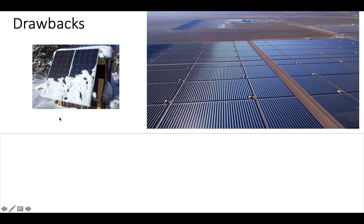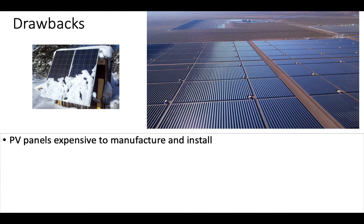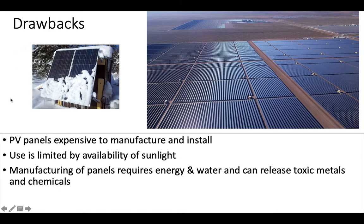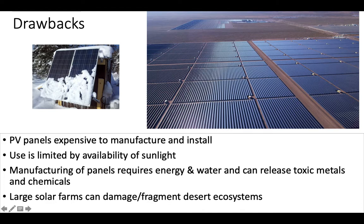The drawbacks, however, are also numerous. They're expensive to manufacture and install, although they are getting cheaper at an exponential rate. Their use is limited by whether the sun is out — on a cloudy day you get less energy, at night it won't work, and if covered by snow you'll have to clean it off. Manufacturing the panels requires energy, water, and oftentimes rare metals that need to be mined, and even the manufacturing process can release toxic metals and gases. Large solar farms can also fragment desert ecosystems — although they are deserts, they are still thriving ecological communities.